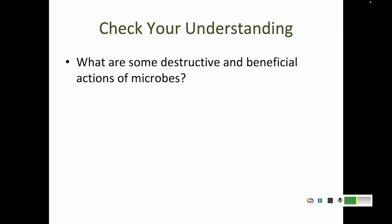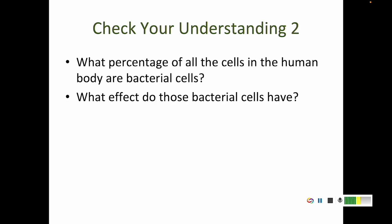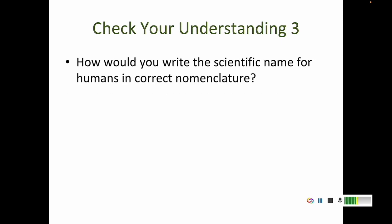At this point, you should be able to understand some principles we've just discussed: What are some destructive and beneficial actions of microbes? What percentage of all the cells in the human body are bacterial cells, and what effect do those bacterial cells have on our body? And how would you write the scientific name for humans in correct nomenclature? Take some time to answer those, make sure you've updated your study guide or class notes, and I will see you back for our next discussion when we start talking about our different types of microbes — bacteria, archaea, viruses, fungi, and how these are similar or different. Okay, I'll see you later. Bye.